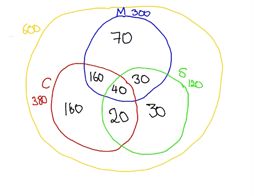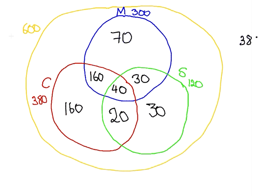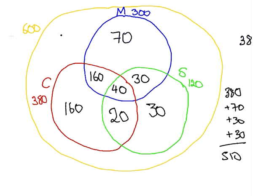Now, how many students have we accounted for altogether? We have 380 in the Computing region, plus 70, plus 30, plus 30 — that is 510. So I have accounted for 510 students. That means there are 90 students who are not studying Mathematics, Computing, or Statistics.